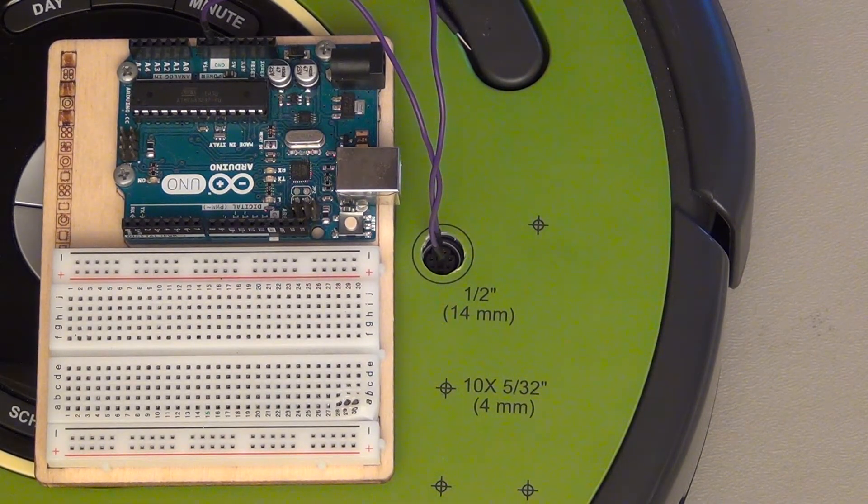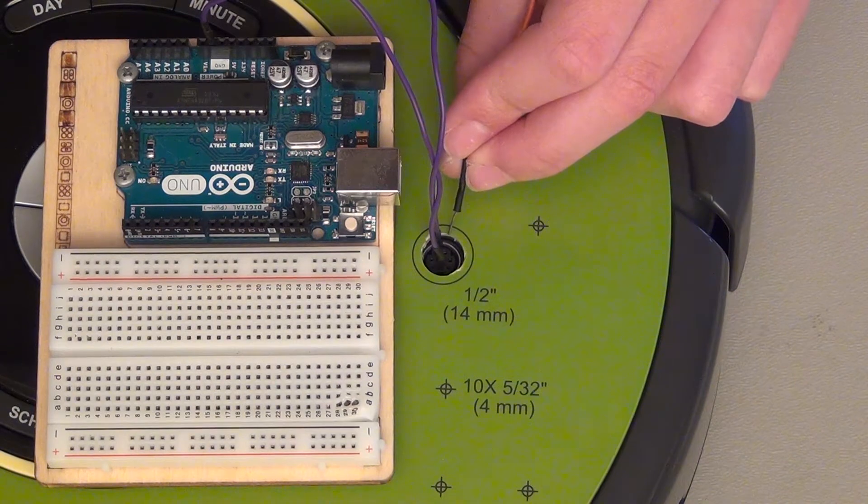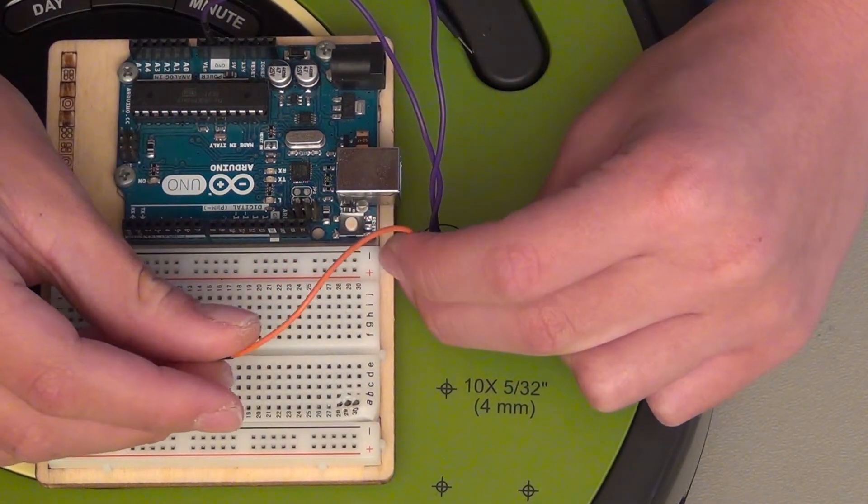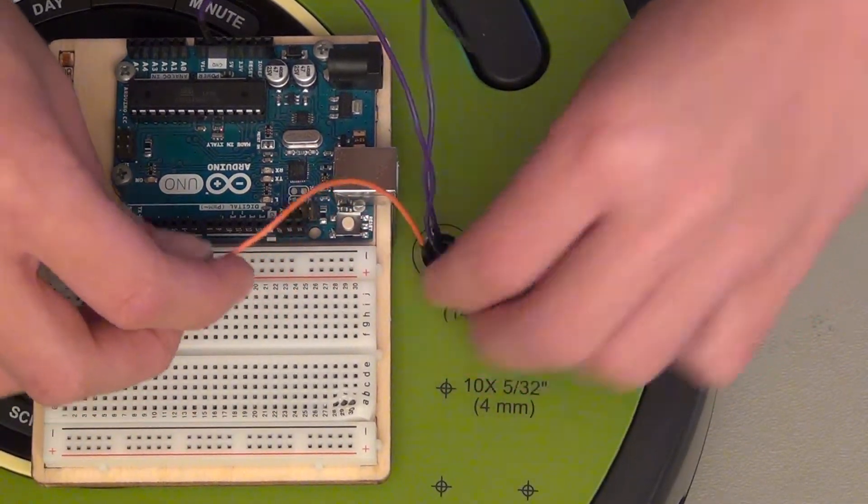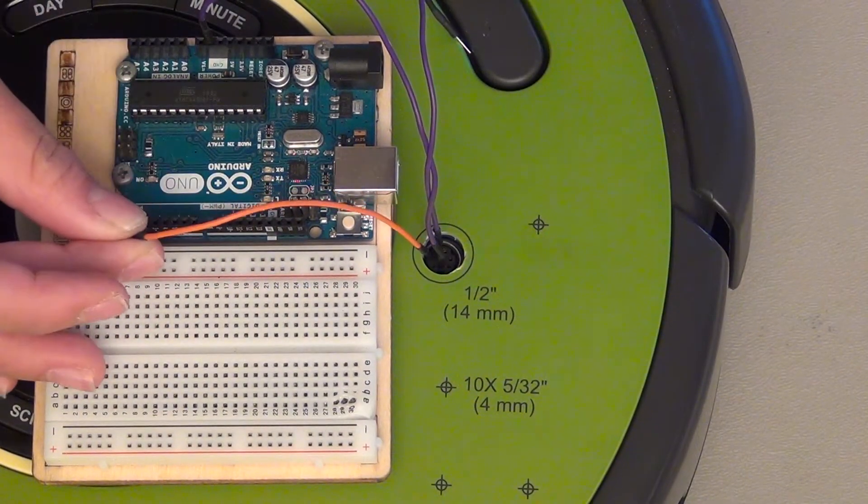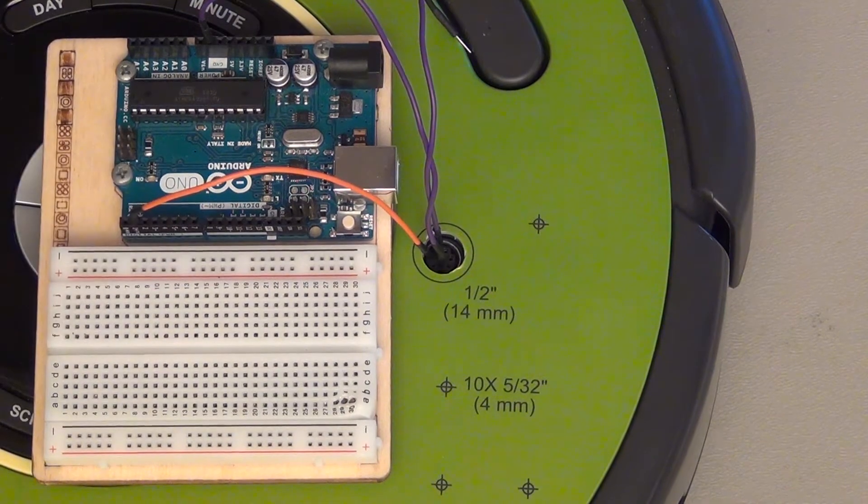Pin three over here is Roomba input. Let's see, put that one in, and then plug it into the transmit, which is also pin one.